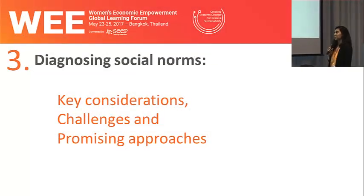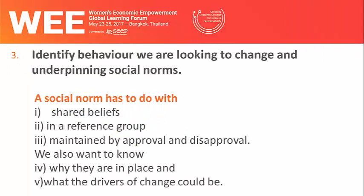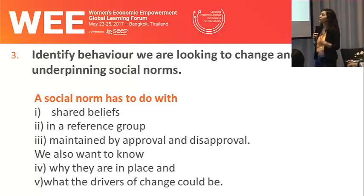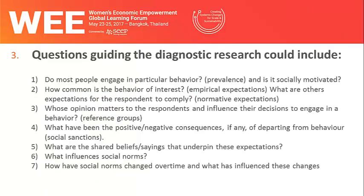How do we diagnose social norms? What are some of the key considerations, challenges and promising approaches? Once we've identified the behavior we are seeking to change, we need to identify which social norms, if any, are contributing to sustaining that particular behavior. As I've already shared, a social norm has to do with shared beliefs in a reference group, maintained by approval and disapproval. And if we want the diagnostic research to also inform our strategies and approaches, we also want to know why social norms are in place and what the drivers of change could be that we could possibly leverage.